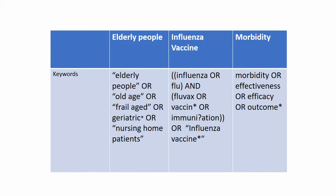Here is the logic table in which we divided our search question into three themes or concepts: elderly people, the flu vaccine, and morbidity, along with some synonyms for each concept. I'm going to copy and paste those from this table into the CINAHL database.